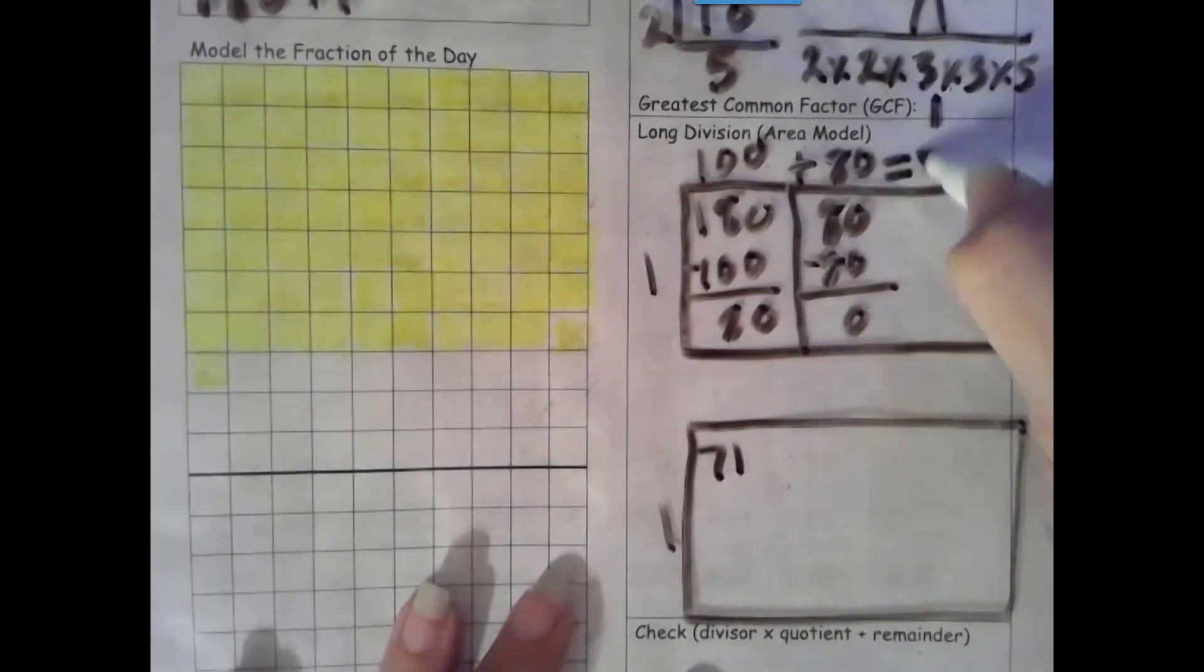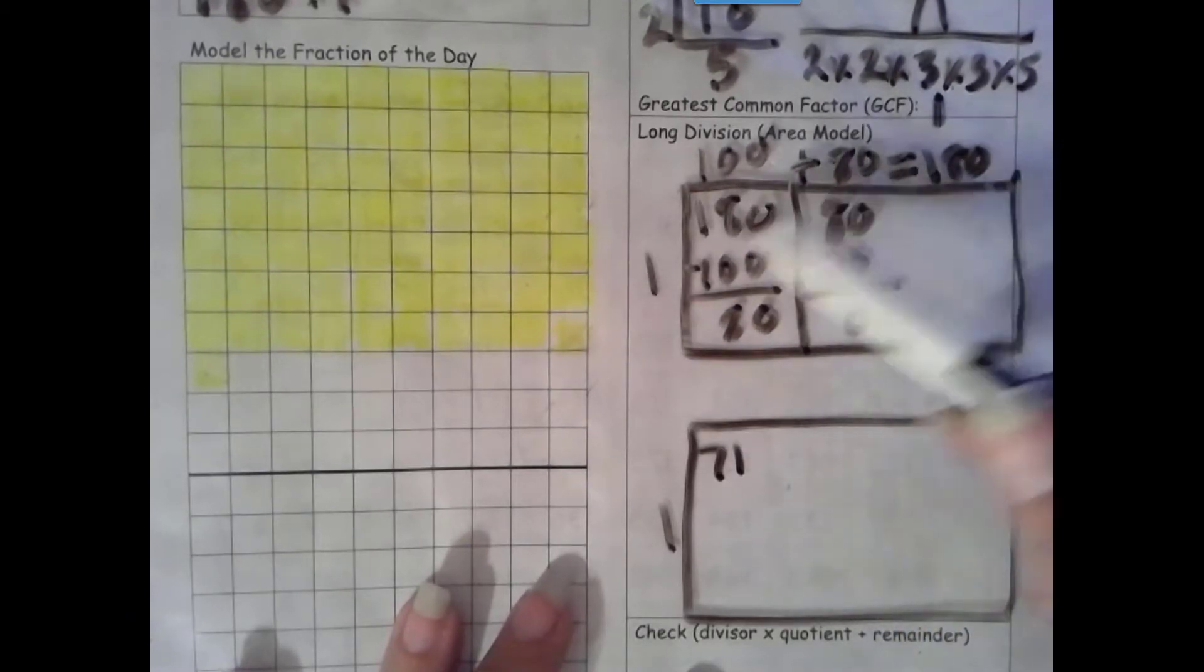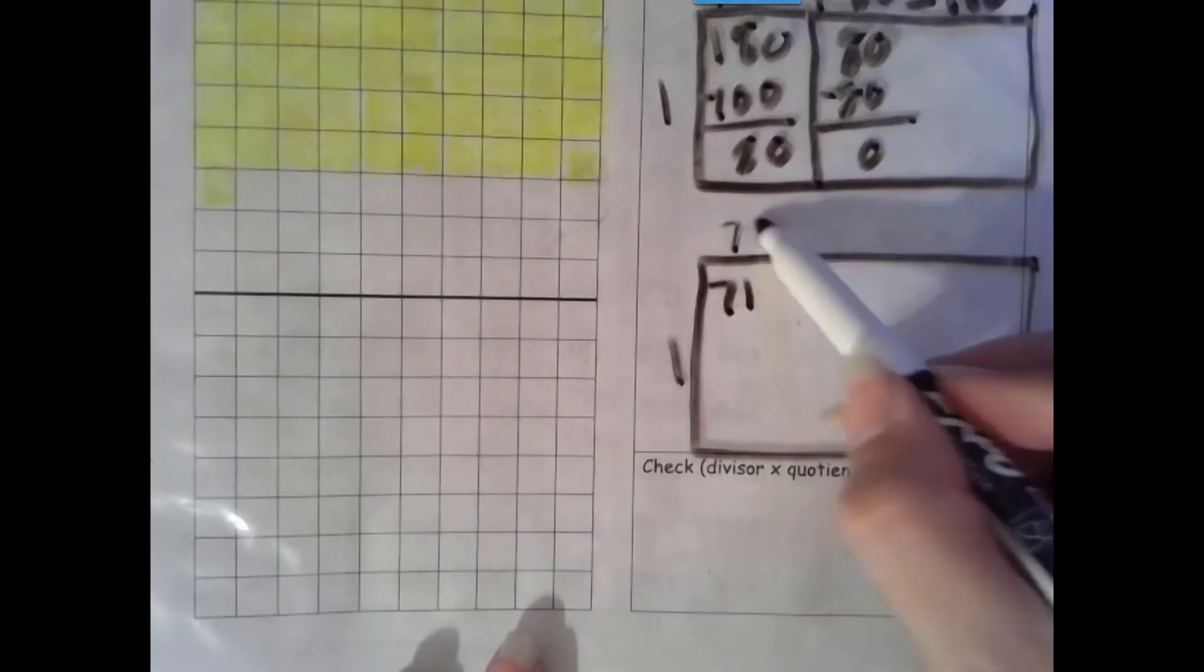Add our partial quotients. Now, you may have known 180 times 1 is 180, but if you're unsure, there's more than one way to get to the answer. Here's 70.